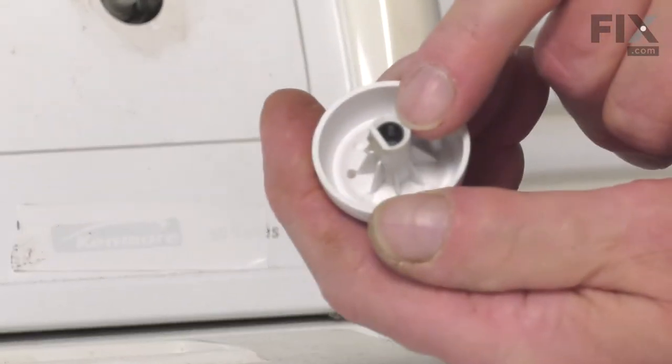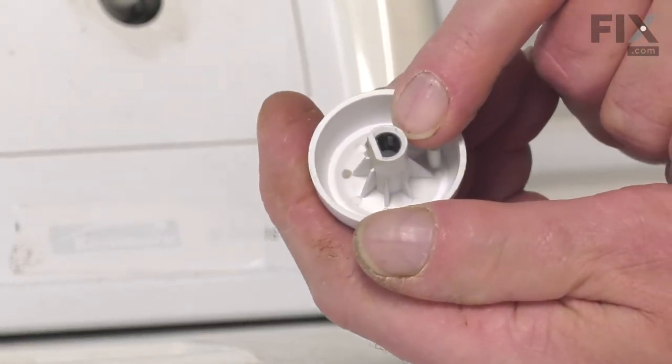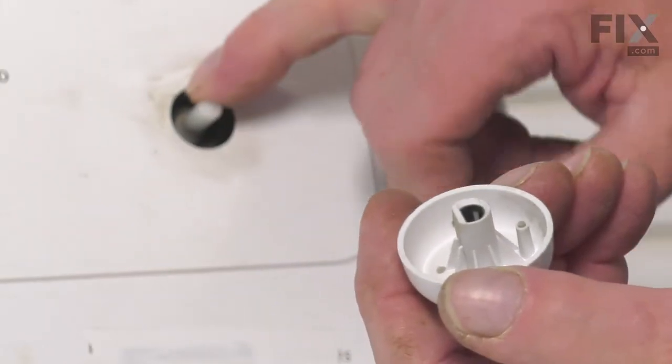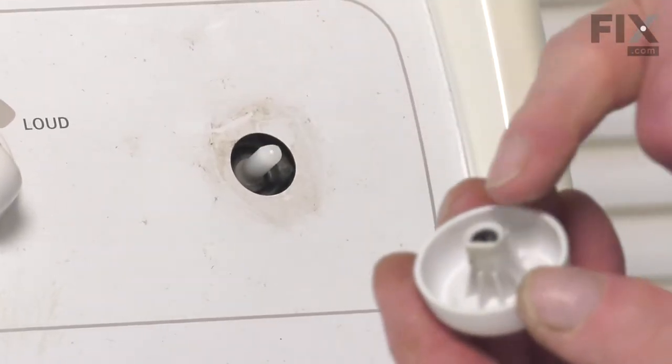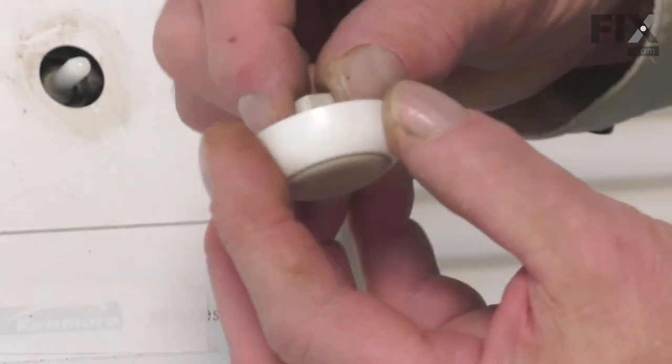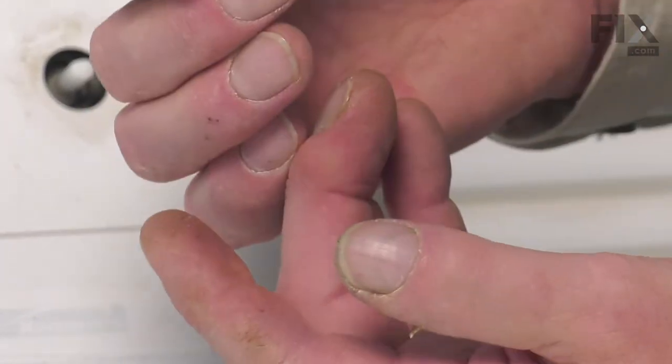Make sure that the metal insert is still inside of the knob, and if not, you'll need to remove it from the old start switch. Also inspect that knob and make sure that there's no cracks in it, and if there is, you'll need to replace that as well.